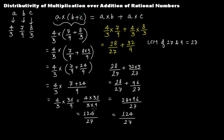That is the same result whether you do the first method or the second. This is what distributivity of multiplication over addition of rational numbers means. It is true for whole numbers and for any integer as well. In the next video, I am going to discuss distributivity of multiplication over subtraction of rational numbers. See you in the next video.